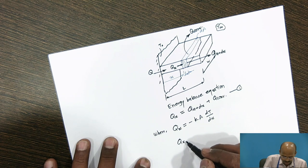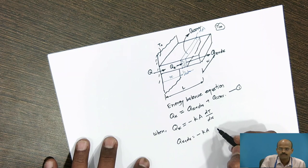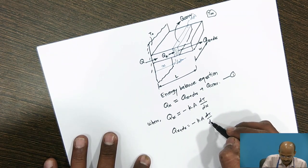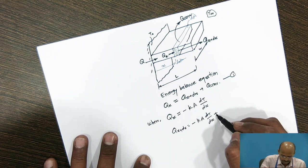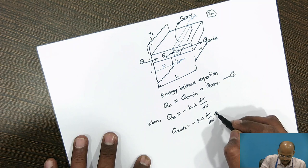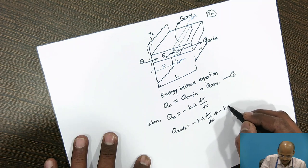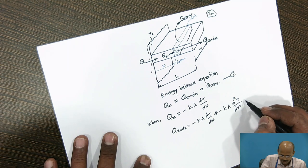I can write for qx+dx as minus kA dT/dx plus minus kA d²T/dx² into dx.